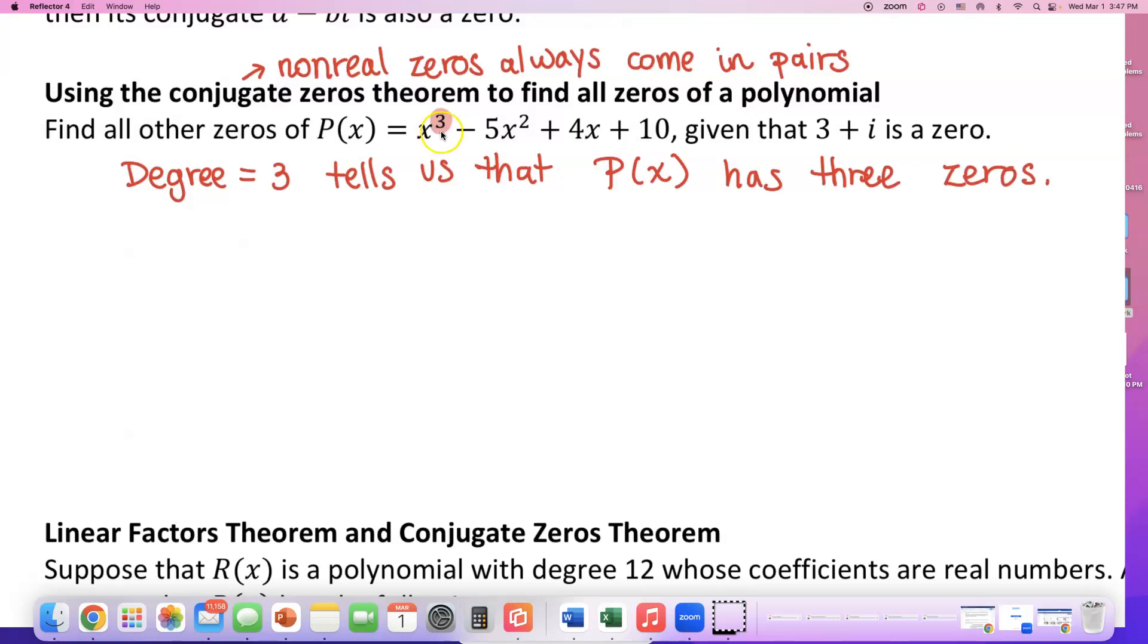They gave us that 3 plus i is a zero. So they're giving us one of the zeros. But are they really giving us one zero? Not really. If x equals 3 plus i is a zero, notice that is not a real number. This is an imaginary number. So its conjugate pair must be a zero. 3 minus i must be a zero because these two are conjugate pairs.